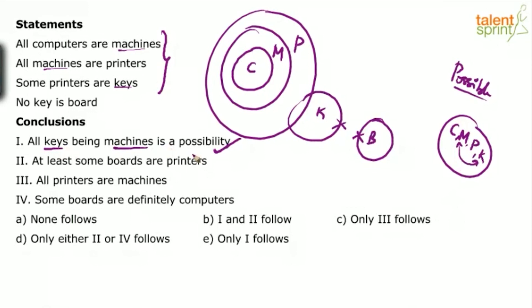Next conclusion: some boards are printers. In the basic diagram itself, boards and printers do not overlap, which means some boards are printers does not satisfy the basic diagram. You very well know that if a conclusion doesn't satisfy the basic diagram, you can mark it as false.